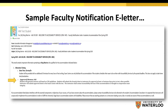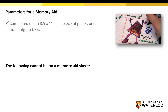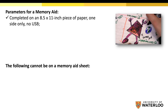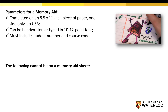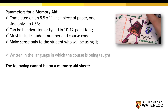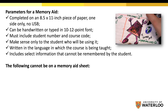The parameters for the creation of a memory aid: a memory aid must be completed on an eight and a half inch by eleven inch piece of paper. Your cues will be written and/or drawn on one side of the paper only. It can be handwritten or typed in a 10 to 12 point font, but nothing smaller. You must have your student number and course code on it, and the items on there must only make sense to you. It must be written in the language that the course is being taught in, and it should only contain the information that you cannot recall without it.